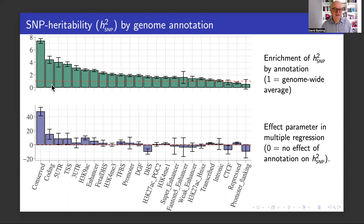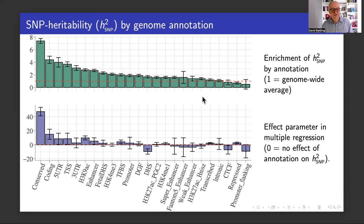The other categories you might expect — coding, five prime UTR, transcript and start sites, three prime UTR, and so on — they're all enriched. But for many other categories, they might be less enriched than you would have thought, and of course some are depleted for heritability.